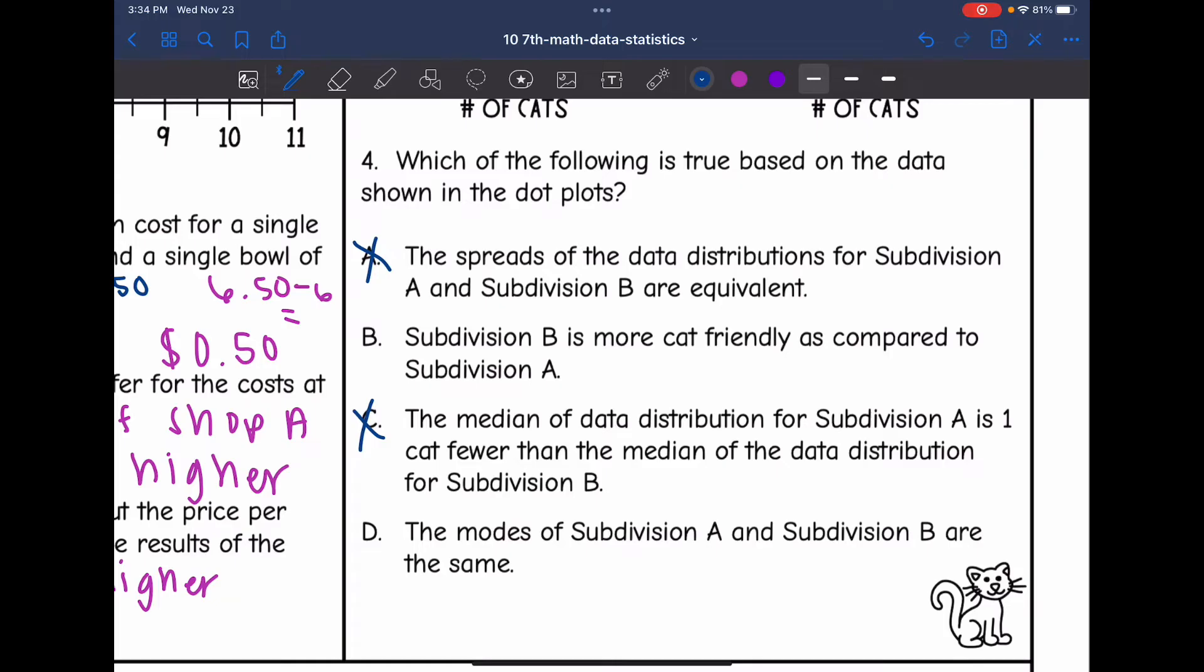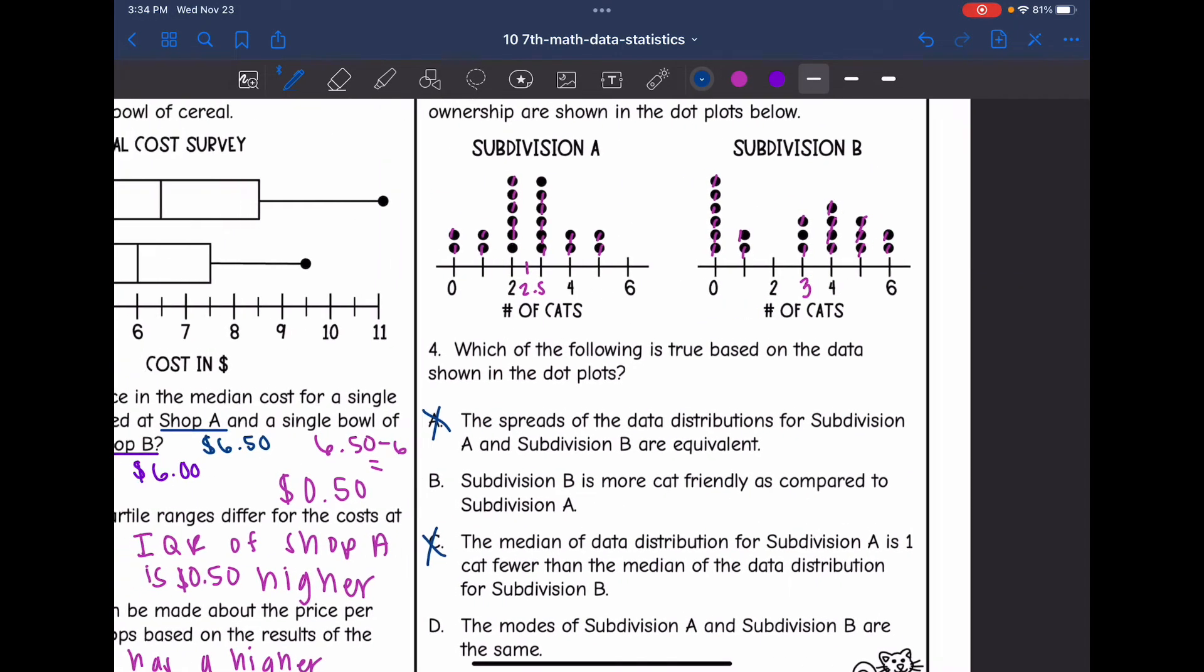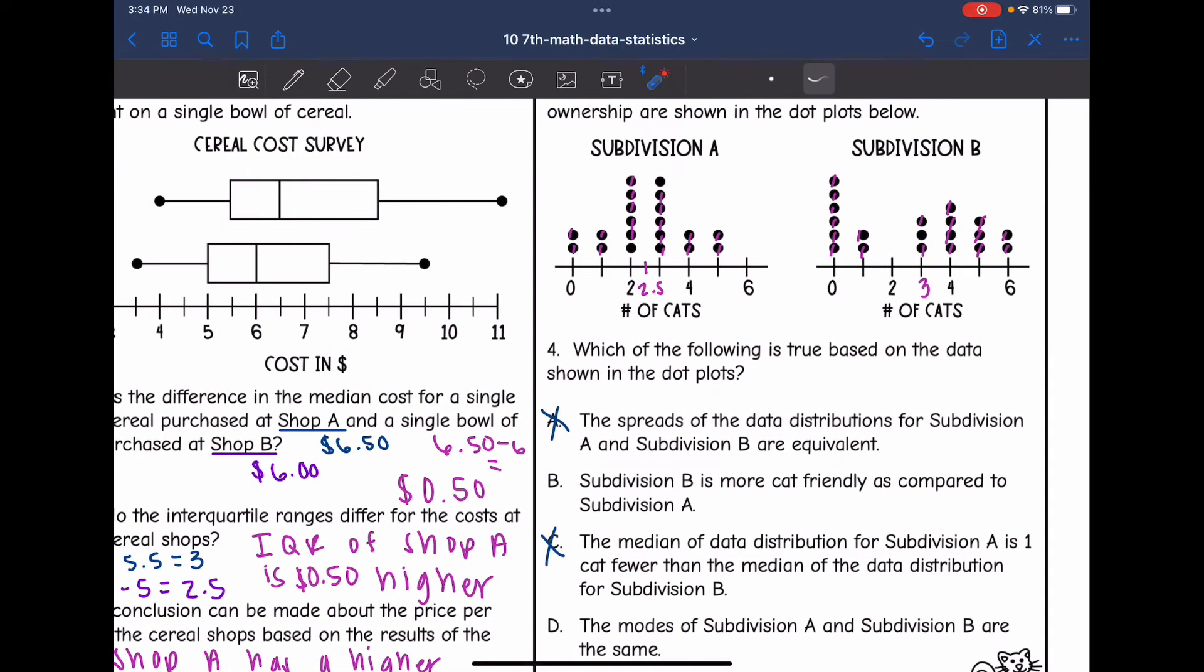And then D says the modes of Subdivision A and Subdivision B are the same. That is easy to see that that is not the same. The modes of A are two and three and of B it is zero. So the best answer here was B.